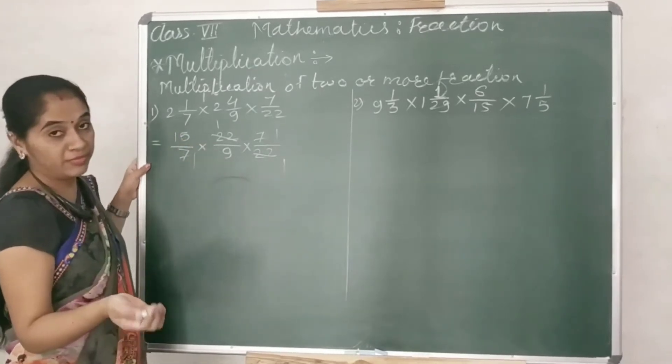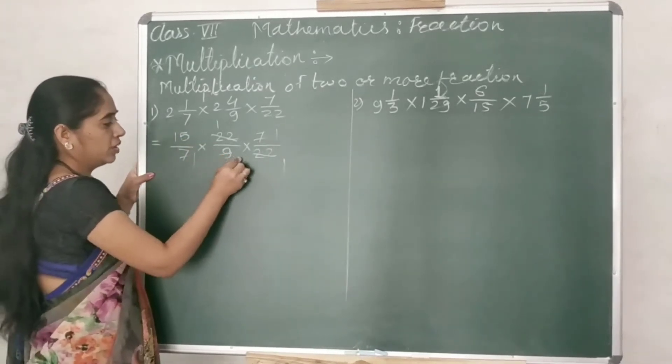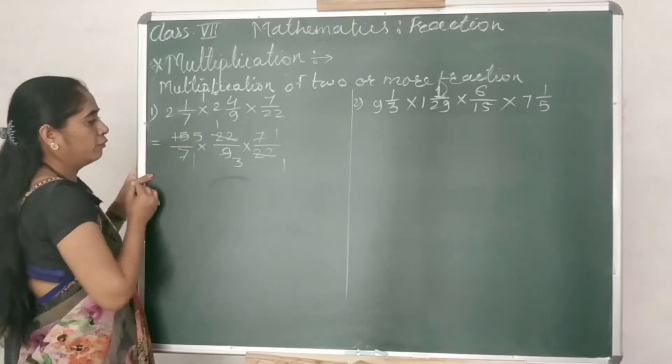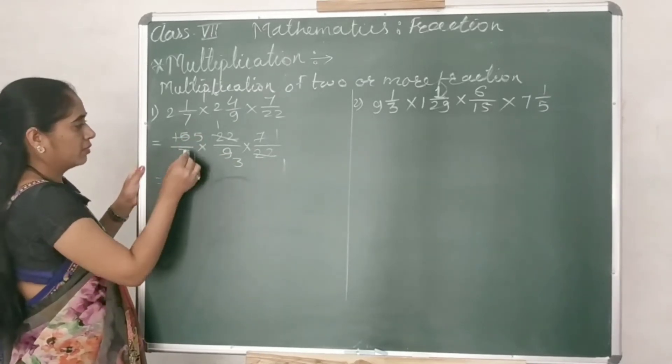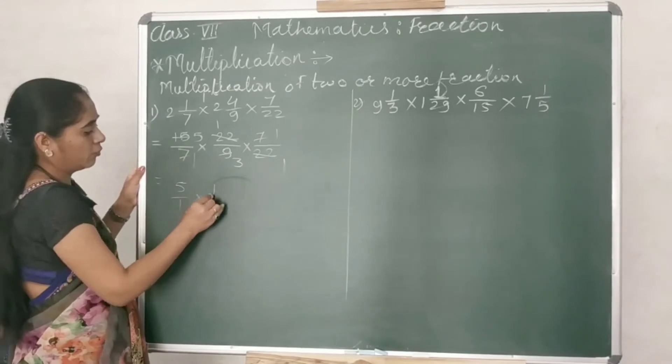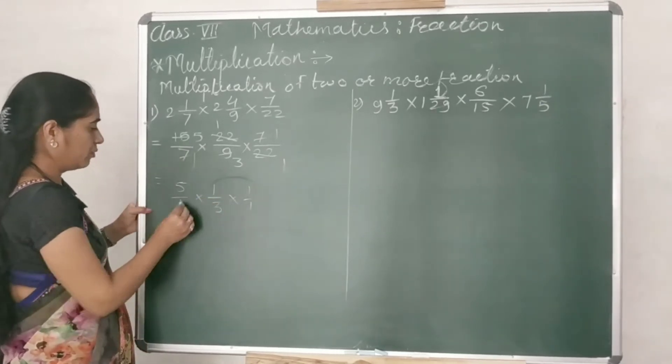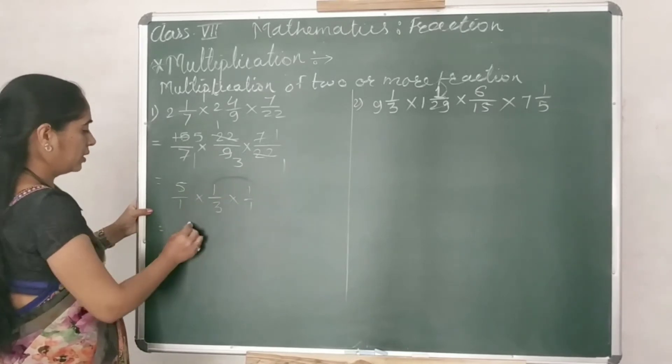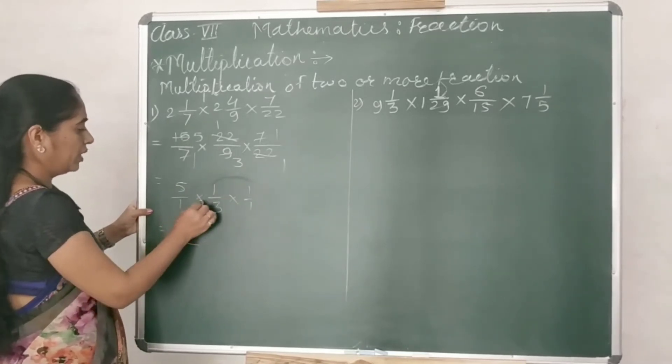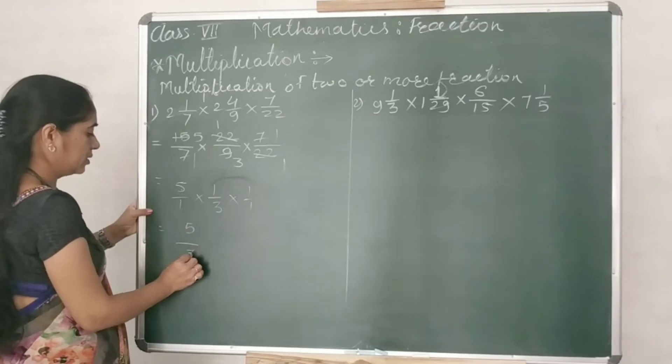This can be simplified by 3. So 3, 3's are 9, 3, 5's are 15. What is answer? 5 upon 1 multiplied by 1 upon 3 multiplied by 1 upon 1. That is equal to 5 into 1 into 1, that is 5 and 1 into 3 into 1, that is 3.